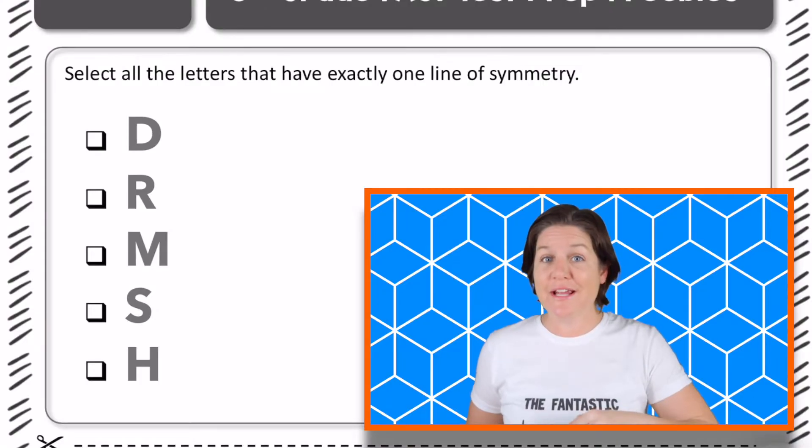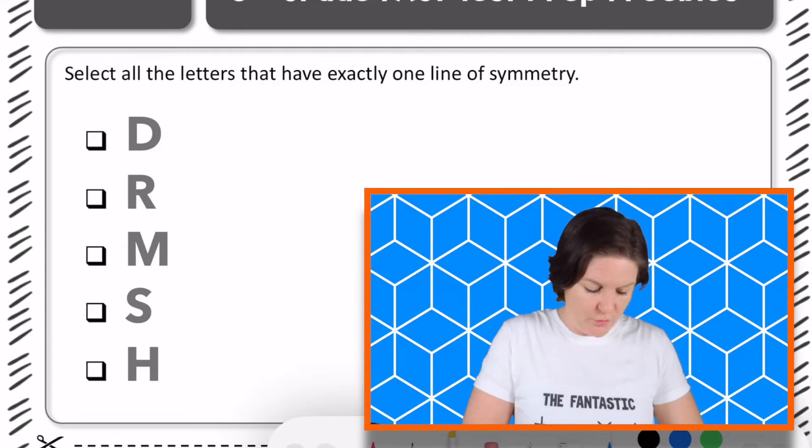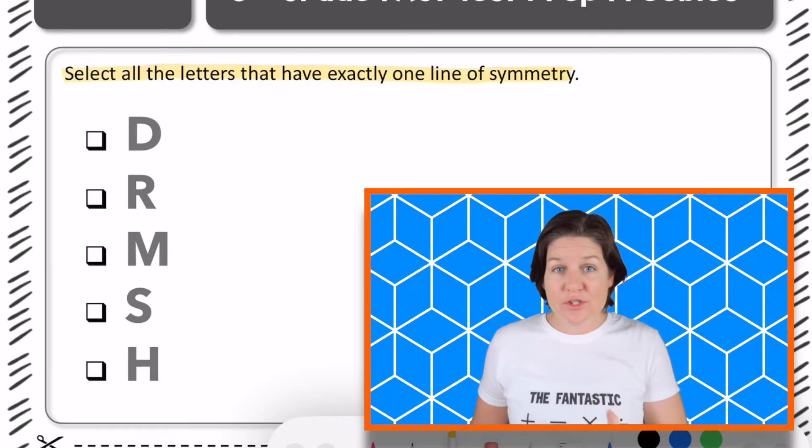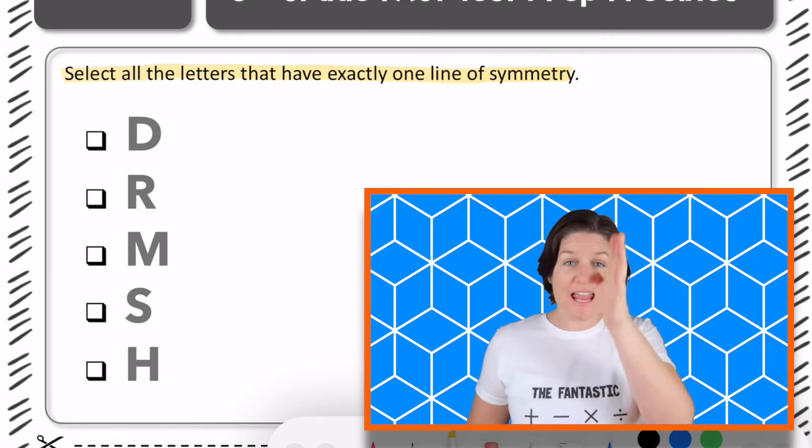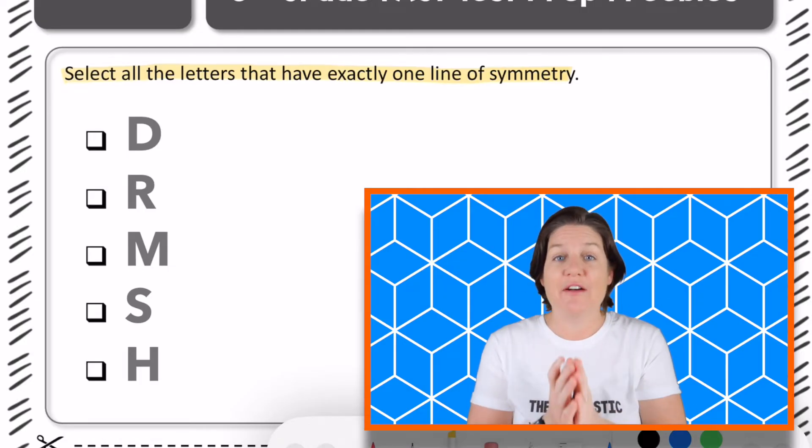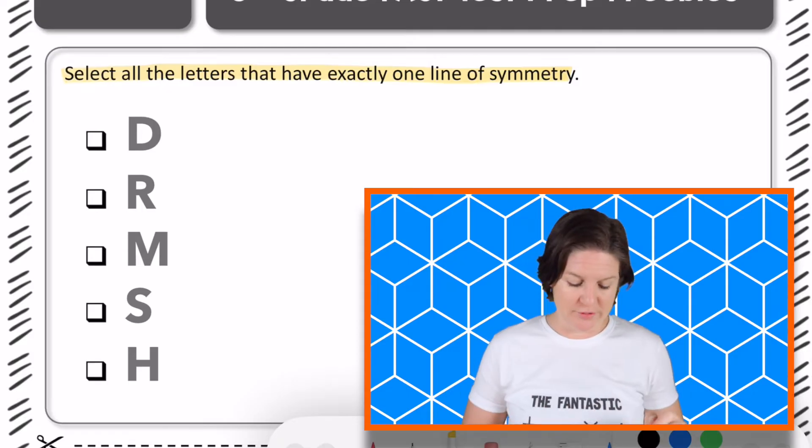Welcome back, third grade. Let's go over this one. This one says to select all the letters that have exactly one line of symmetry. A line of symmetry is when you can create a line, and if you were to fold on that line, you would have mirrored images on both sides.